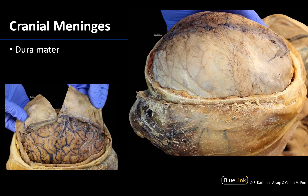As we know from the lecture videos, meninges are those membranous coverings of the brain and the spinal cord. There are three types of meninges and the most external layer is the dura mater, which is the toughest and the thickest layer, often appearing a pearly white or silver color. When the calvaria or skull cap is removed, the first thing you should see is not the brain but the dura mater, which you can see very clearly here. You can also see a bit of the dural venous sinus deep to this region.